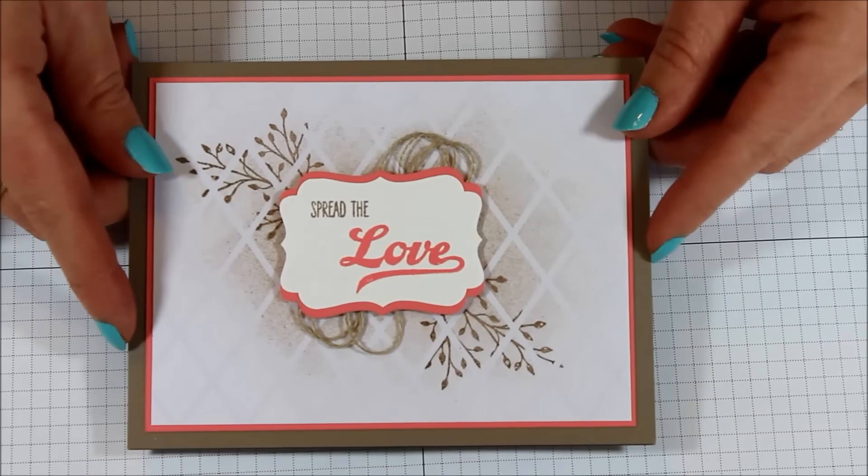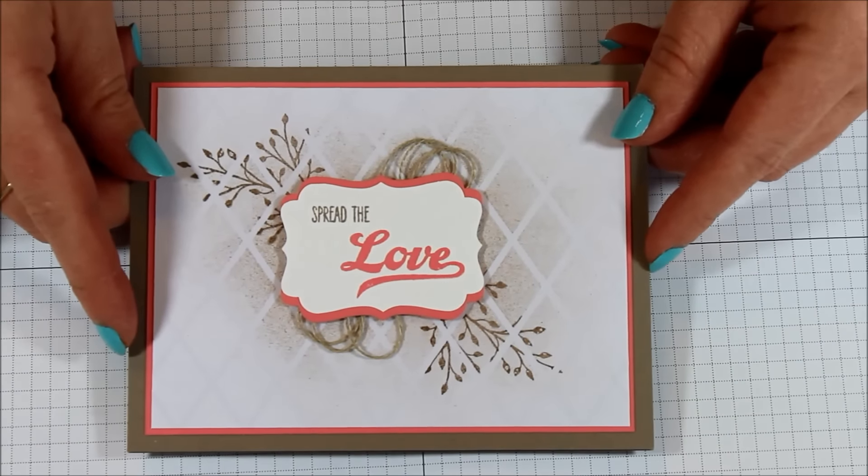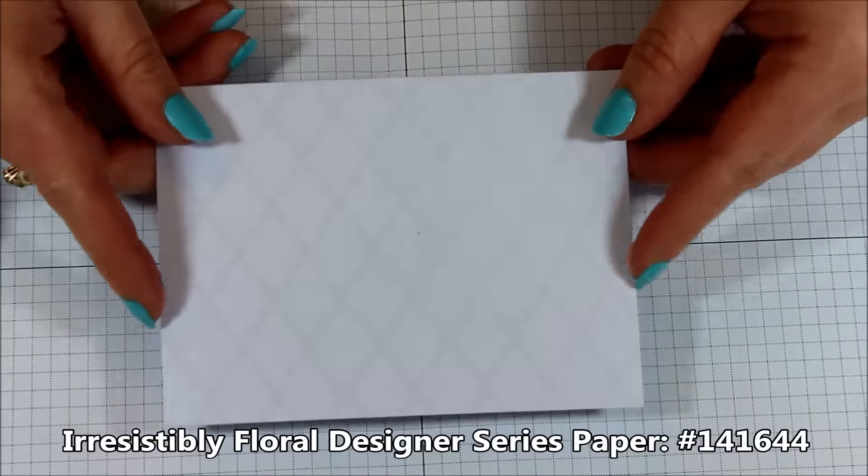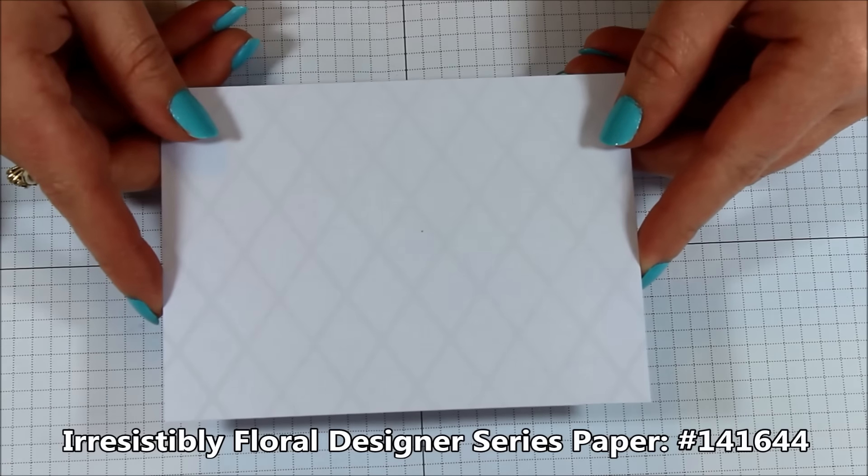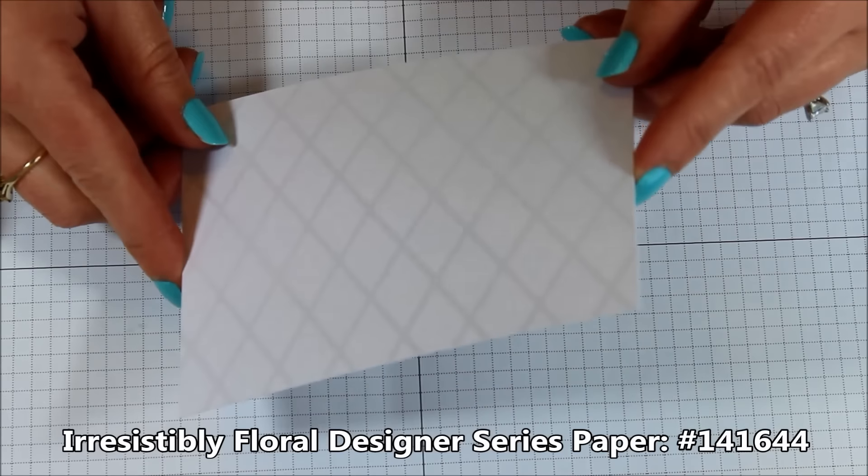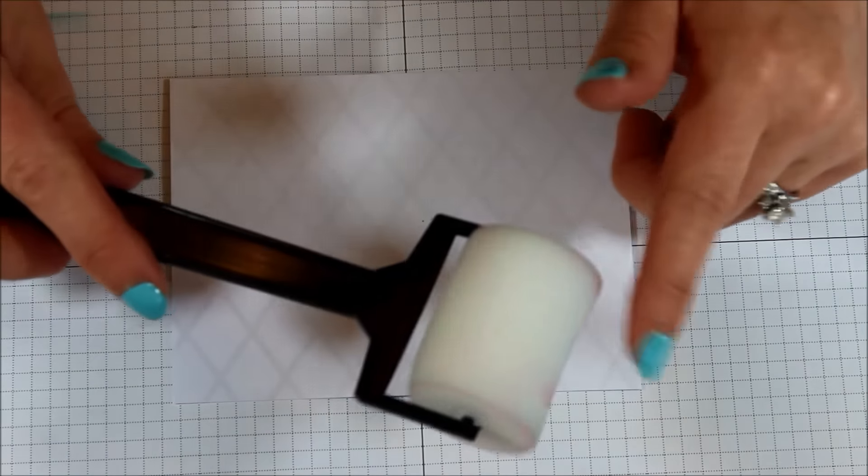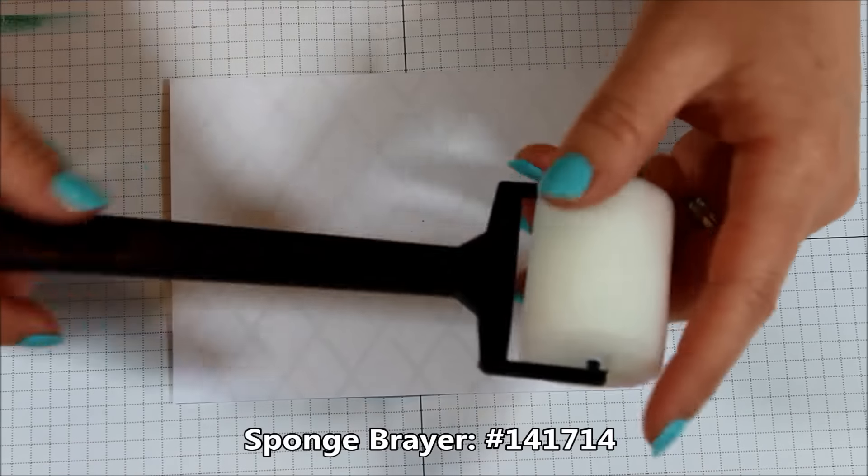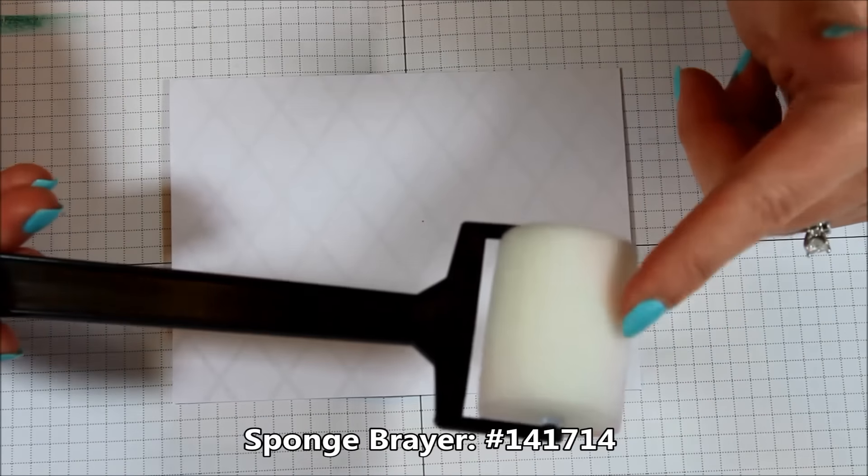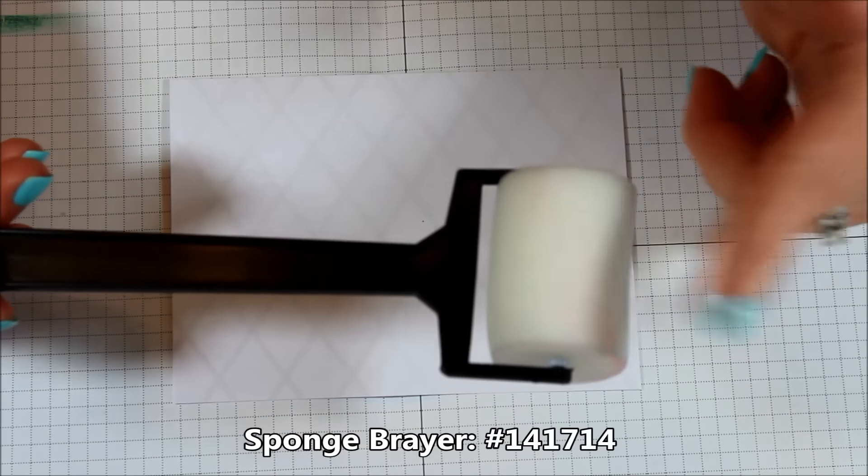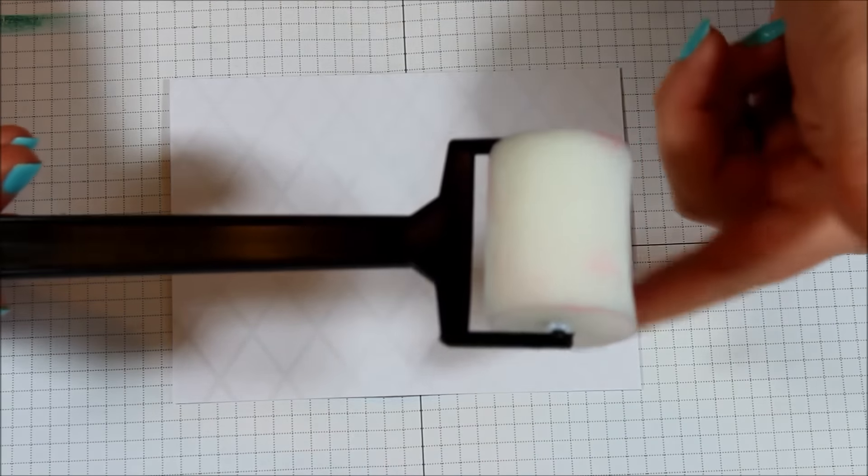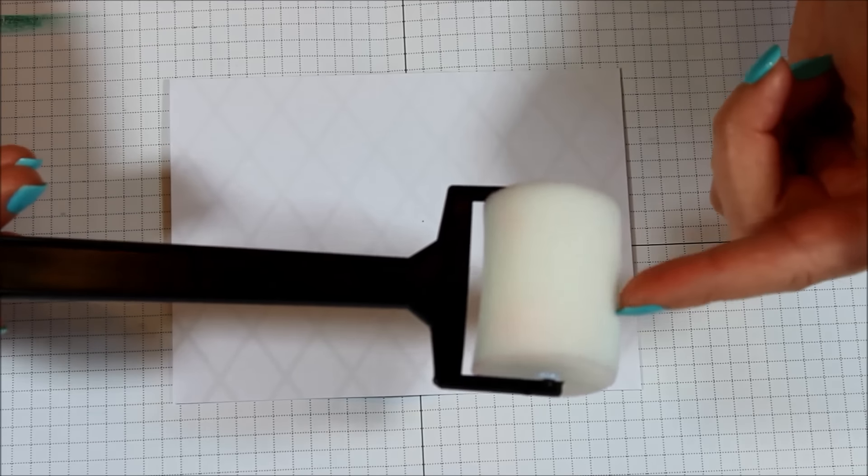So I wanted to show you how I got this fabulous look. I started with a piece of three and three quarters by five inch of the designer series paper, and this is the triangle piece. I took my sponge brayer. With these sponge brayers they come with two handles and four of the sponges, so you can interchange them for different colors. You can even wash these.